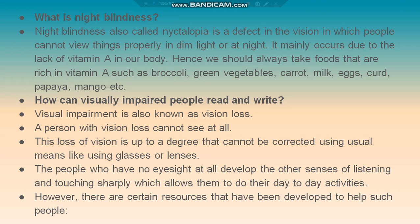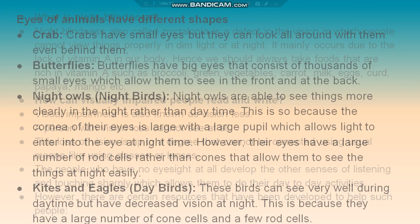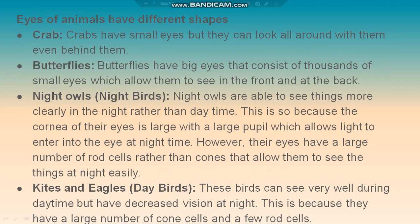Let us look at the eyes of animals having different shapes. Crabs have very small eyes but can look all around — even behind them. Butterflies have very big eyes consisting of thousands of small eyes, which allow them to see both in front and at the back.